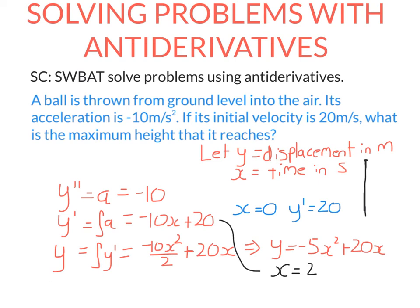So if x equals 2, that means that the height above ground is going to be minus 5 times 2 squared plus 20 times 2. That gives me an answer of 20 meters. The maximum height the ball reaches is 20 meters.